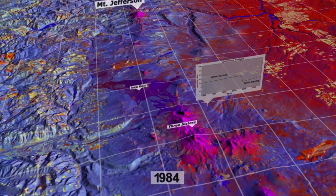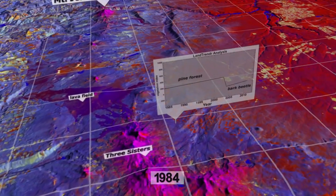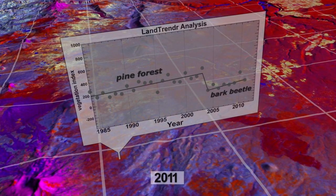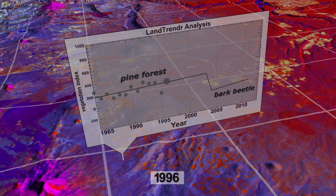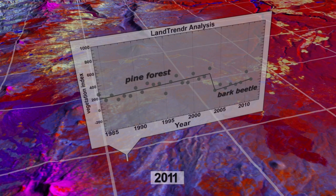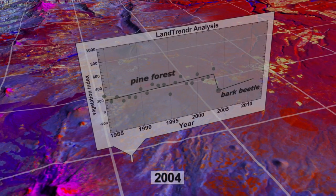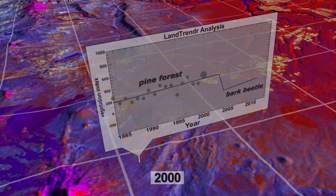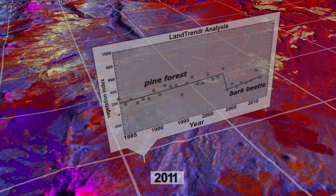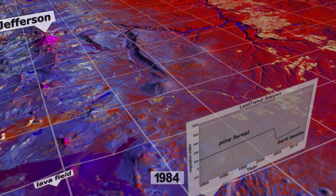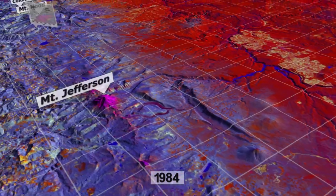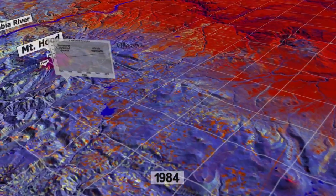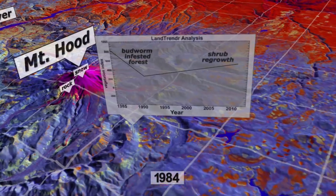The progression with bark beetles is we have a fairly stable lodgepole forest, then there will be an explosion — an epidemic of these beetles. Our color scheme goes from stable forest, which is in tones of blue, to this bright red coming from the soil and from branches and things that are revealed when the trees lose their needles and when the needles change color.